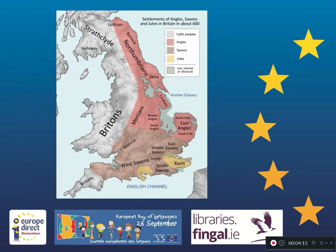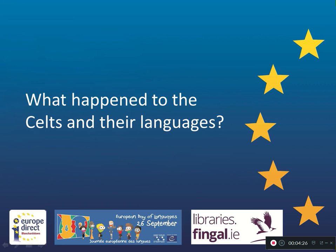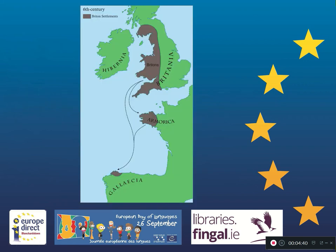You can see here where they settled — the Saxons down here, the Angles up around this area, and in Kent we had the Jutes. Interestingly, we need to ask what happened to the Celts and their languages in Britain. The languages the Celts spoke were called Brittonic, and they survived to some extent. Many of the Celts moved west into what is today Wales and Cornwall. Welsh and Cornish are related to these Brittonic Celtic languages. Some moved to what we today call Brittany in the north of France, and the Breton language is quite similar to Cornish and Welsh. Another group continued all the way down to Galicia in Spain.